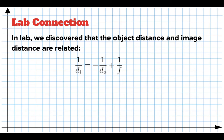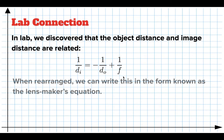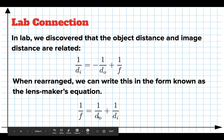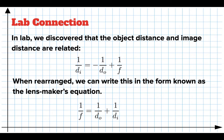So we found this relationship in lab: 1 over d_i equals negative 1 times 1 over d_o, plus 1 over the focal length. We can rearrange this — bring the 1 over d_o to the other side of the equation, and it becomes positive. Then it can be written as: 1 over F equals 1 over d_o plus 1 over d_i. This is the lens maker's equation, and it's one of the two pieces we're going to use to solve problems.